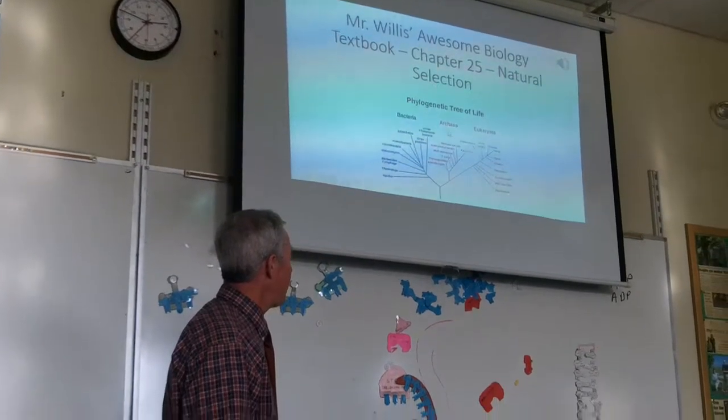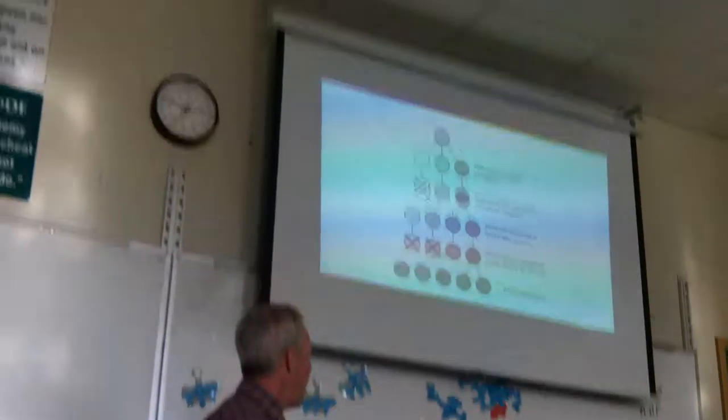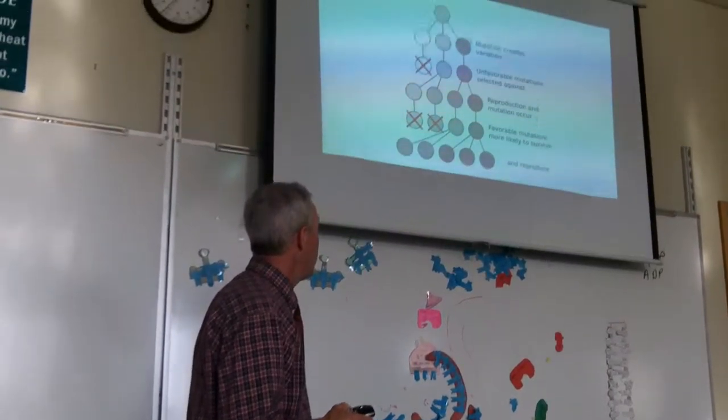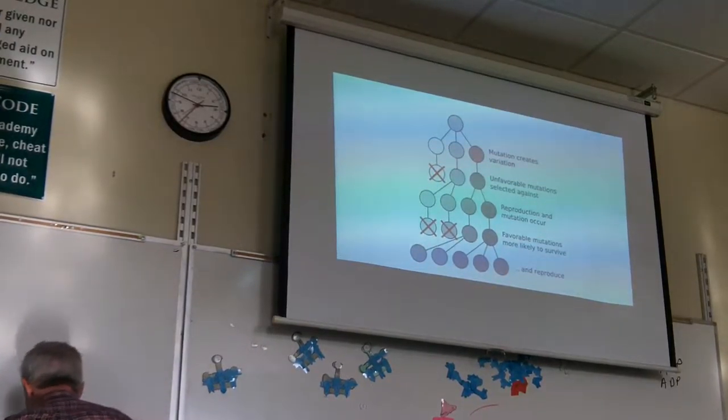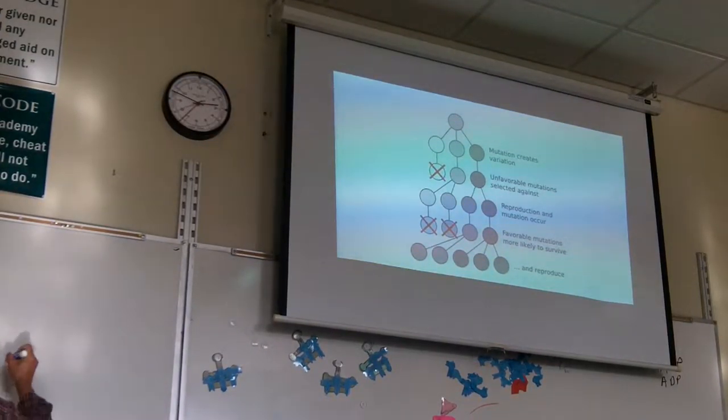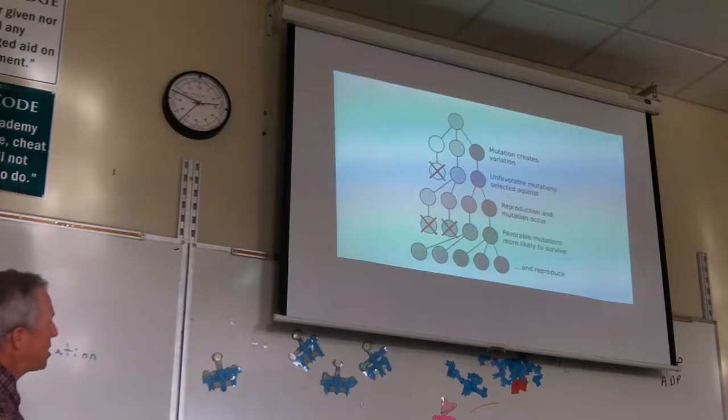Yesterday we started chapter 25, natural selection, and we talked about how organisms have variation. There were four things necessary for natural selection to happen. One, organisms have variation. You can see that variation in this example by the different colors that are possible.